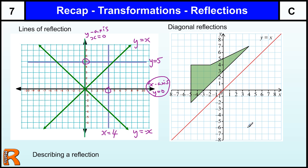Now, a diagonal reflection is the one that causes most problems. Vertical and horizontal you shouldn't really have an issue with if you're careful. But let's have a look at a diagonal reflection.